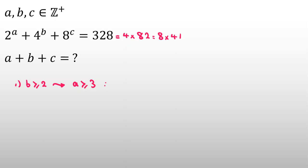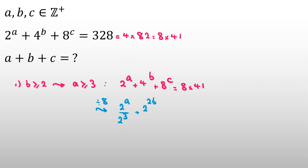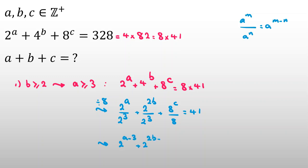We know A is at least 3, and 2 to the A plus 4 to the B plus 8 to the C equals 8 times 41. Dividing both sides by 8: 2 to the A over 2 cubed, plus 4 to the B — which is 2 to the 2B — over 2 cubed, plus 8 to the C over 8, equals 41. By the power rule, this becomes 2 to the (A minus 3) plus 2 to the (2B minus 3) plus 8 to the (C minus 1) equals 41.